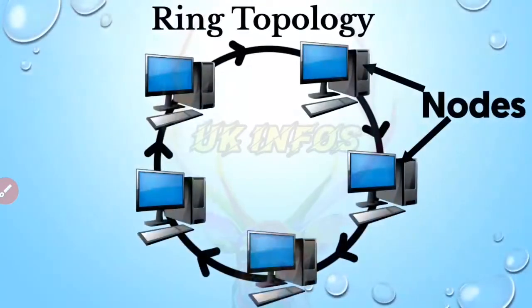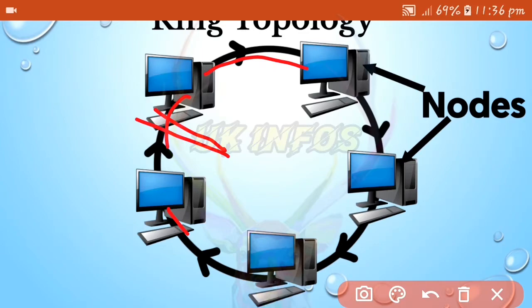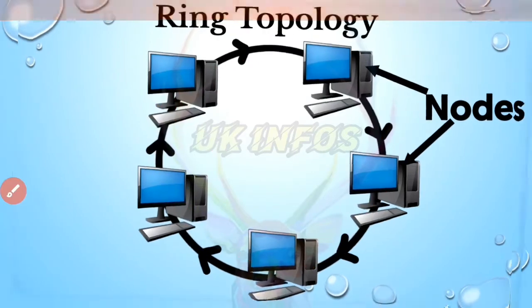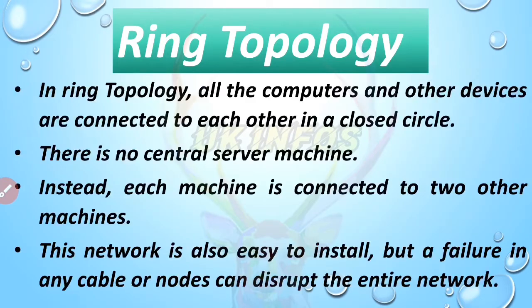In ring topology, no server is needed. Instead, each machine works as a server, and each node is connected to two other machines, forming a closed circle. This network is also easy to install, but a failure in any cable or node can disrupt the entire network.